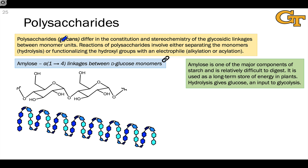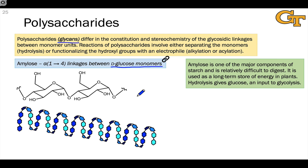We distinguish between polysaccharides — which are also called glycans — using differences in the connectivity and stereochemistry of their glycosidic linkages, in addition to the identity of the monosaccharides involved. D-glucose monomers in biochemicals are by far the most common. There's plenty to know just thinking about D-glucose monomers, since there is a very large variety of stereochemical configurations and connectivities that can show up in potential polysaccharides even with just D-glucose monomers.